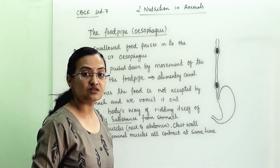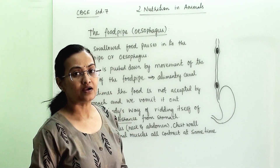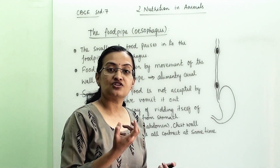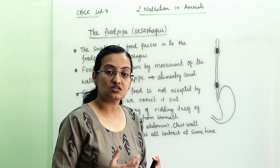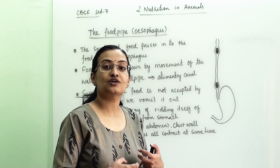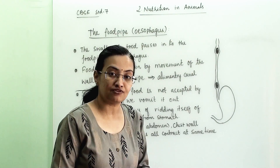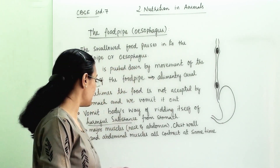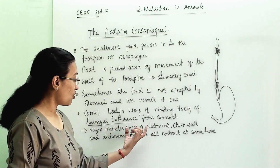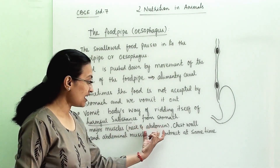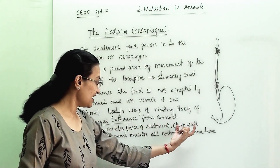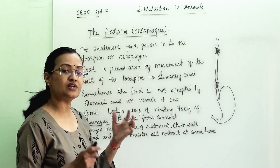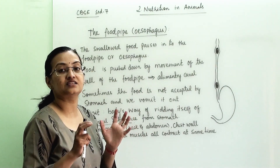When we eat something bad or infectious, that infection enters the stomach and the stomach wants to get rid of it. So how does this happen? The major muscles of the neck, chest wall, and abdomen all contract at the same time.